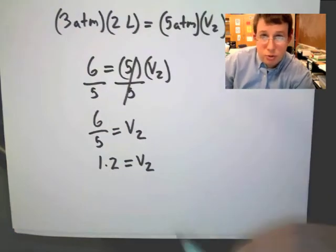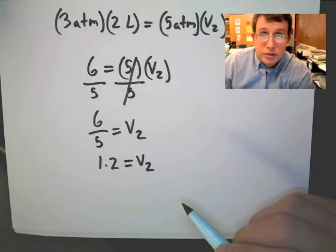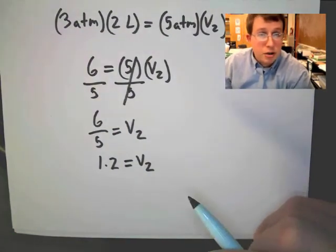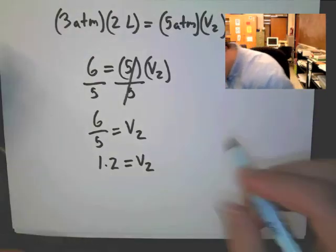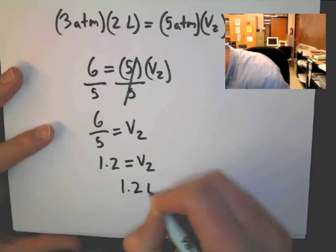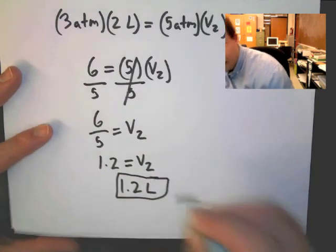However, there's one thing we need to make sure we put in there. And that's our units. If you think about this, our initial volume was in liters, so our final volume should be in liters as well. So the answer is 1.2 liters. Thank you.